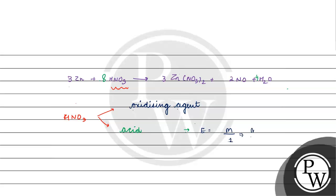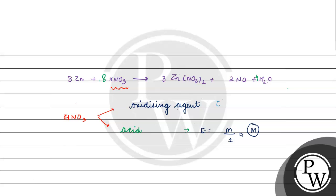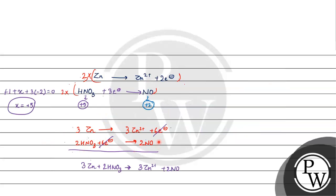Equivalent weight equals molecular weight divided by N factor. When HNO3 acts as an acid, the N factor equals the number of replaceable hydrogen atoms, which is 1. So equivalent weight as acid = M/1 = M. When it works as an oxidizing agent, we look at electrons involved: HNO3 plus 3 electrons gives NO, so N factor = 3.